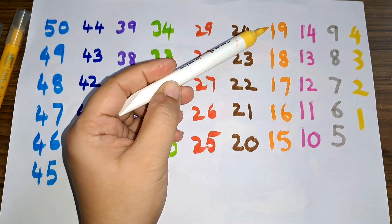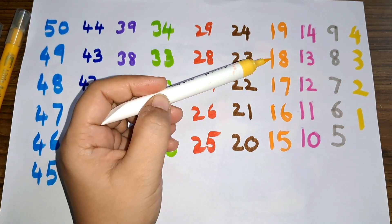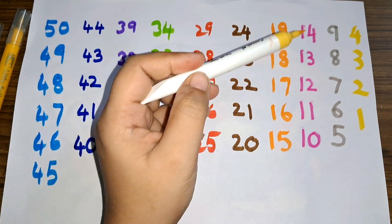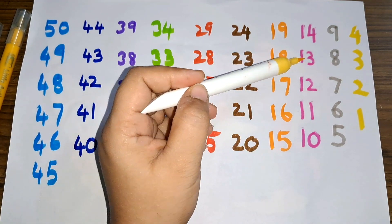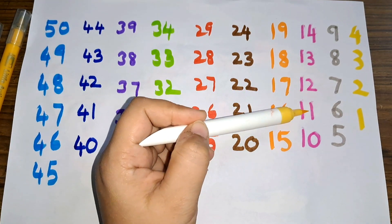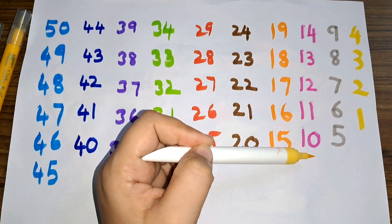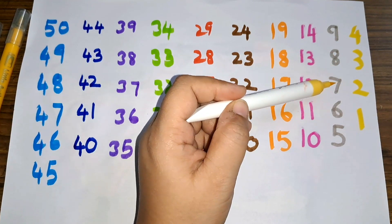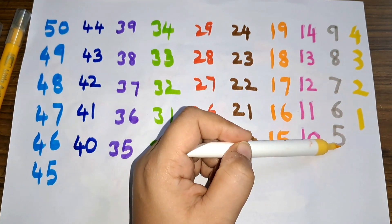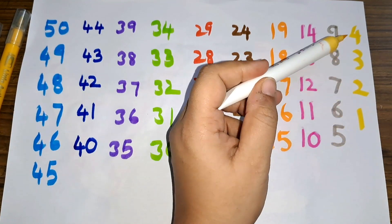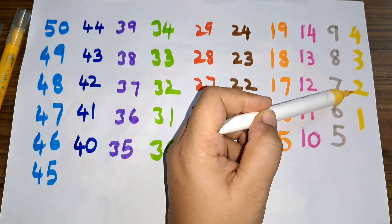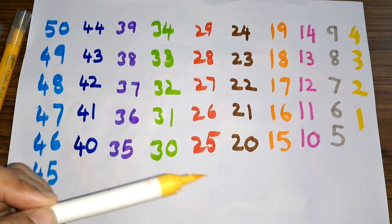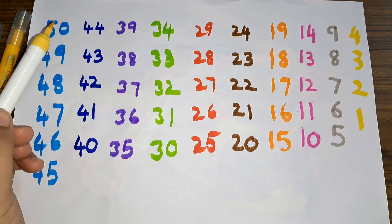20, 19, 18, 17, 16, 15, 14, 13, 12, 11, 10, 9, 8, 7, 6, 5, 4, 3, 2, and 1. These are the backward counting from 50 to number 1.